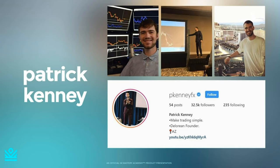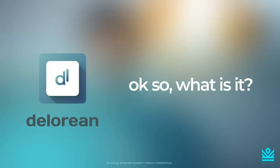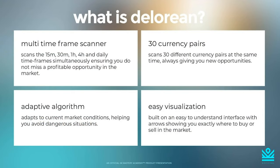The DeLorean is a multi-time frame scanner. It scans the 15-minute, 30-minute, one-hour, four-hour, and daily time frames simultaneously, ensuring you do not miss a profitable opportunity in the market. While it's scanning those time frames, it is also scanning 30 different currency pairs at the same time — altogether 150 different custom combinations are being scanned every minute to ensure that nothing is missed in the market.